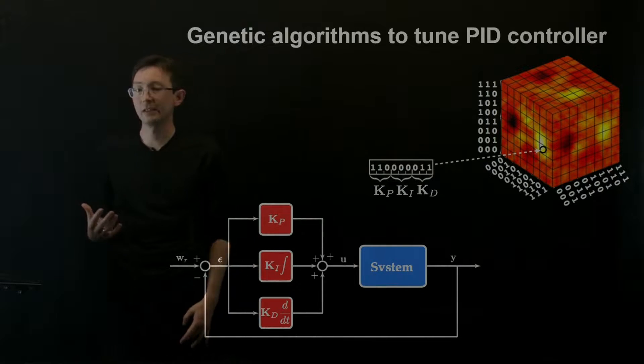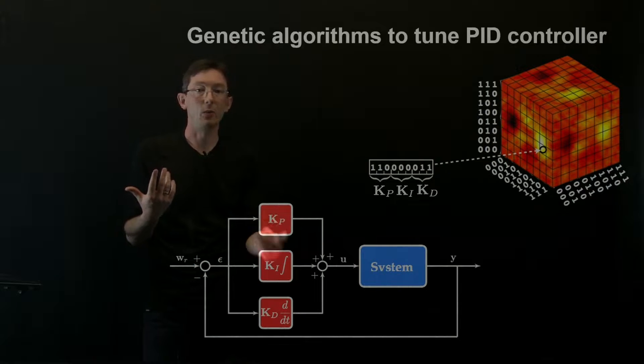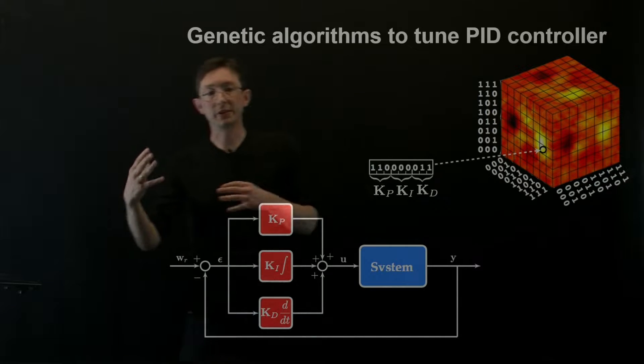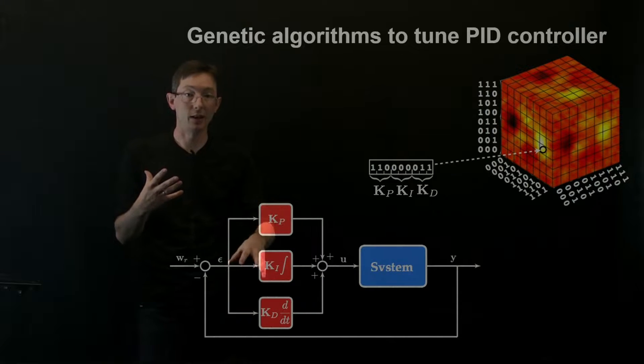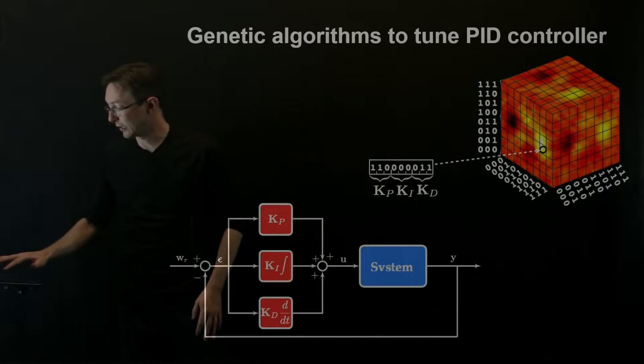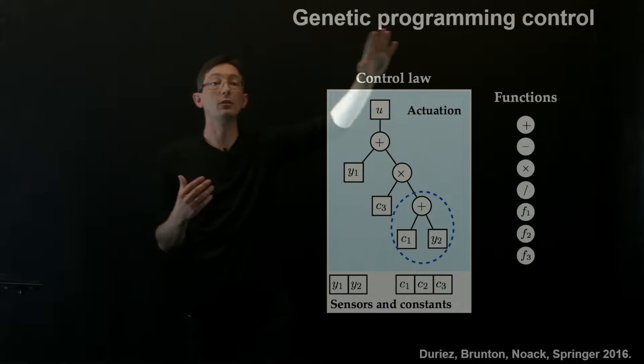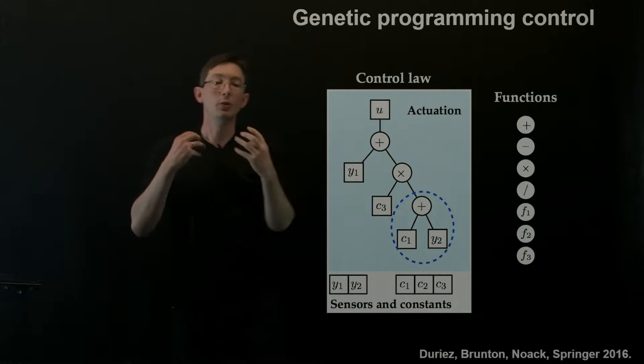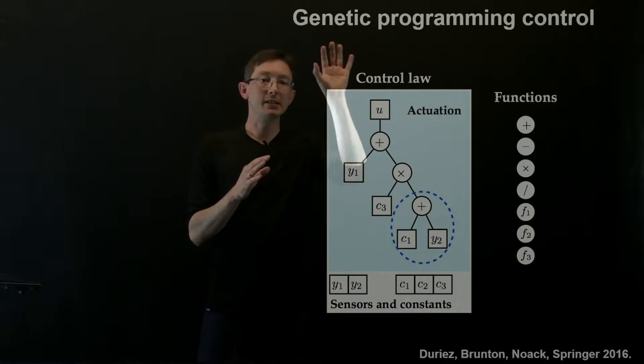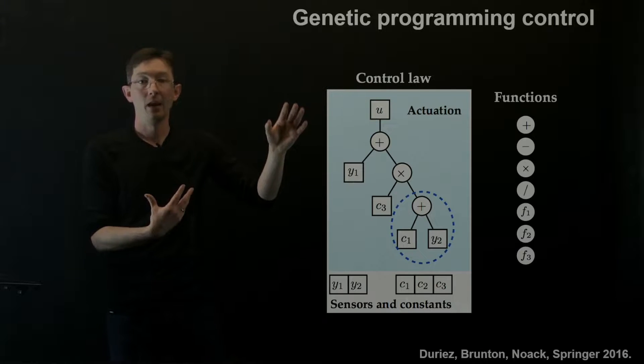But in many control problems of interest, I don't actually know what the structure of the control law I want to use. I don't know if I want a PID control law or some kind of a Kalman filter. Like, I just don't know what the actual even structure of the control law is that I want. And so it's not as simple as a parameter optimization. So what I'm going to tell you about now is genetic programming control. It sounds very similar, but instead of genetic algorithms, we're using something called genetic programming, which is considerably more machinery.